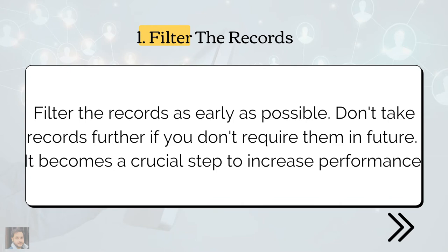Yes, it's true — Catalyst will automatically pull only those columns you are going to use, thanks to lazy evaluation. But what if you want to filter by records, not columns? For example, if you want to find the count of records only for Asian countries, you don't need European or African countries data. A good idea is to filter out that data at the very beginning. Although predicate pushdown can also help, it doesn't work in all scenarios. As a thumb rule, always filter your data as much and as early as possible.